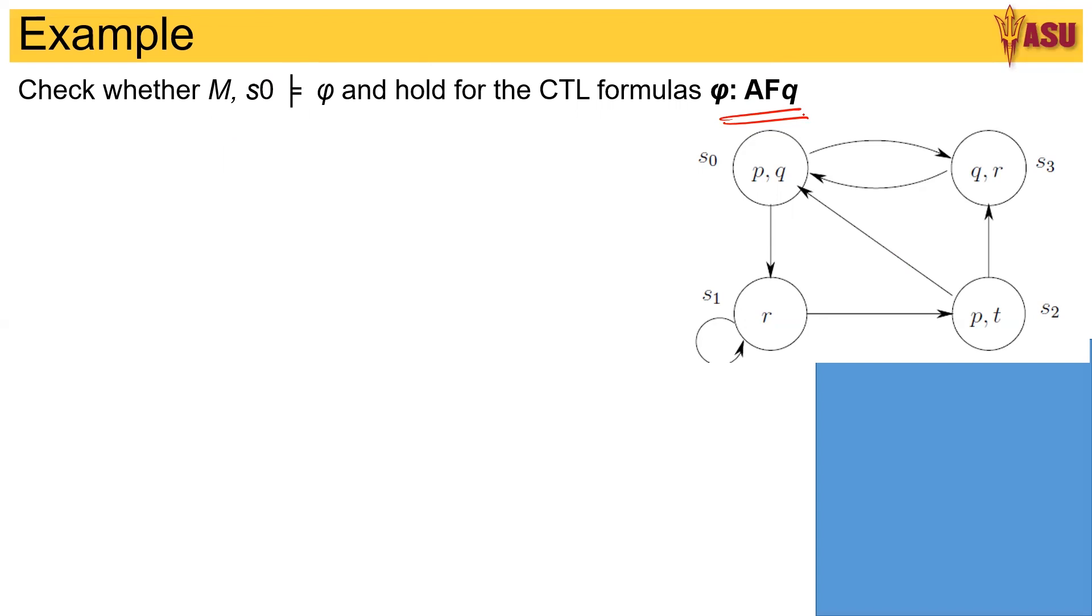It starts from s0. One way of simply looking at it is look at the diagram and follow the paths directly and see if it works out. From s0 it says all future has a q. One path is from s0 to s3 and there is a q. The other path goes from s0 to s1 and there is no q here.